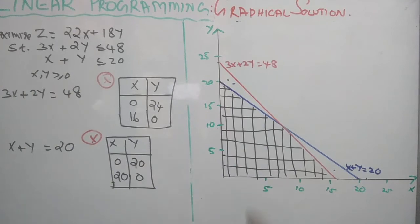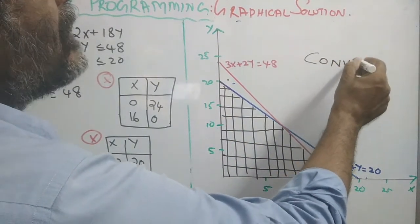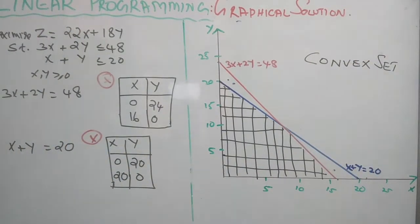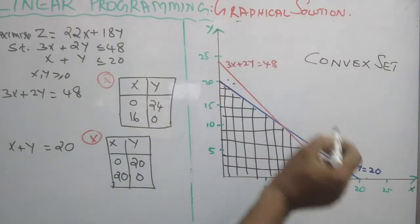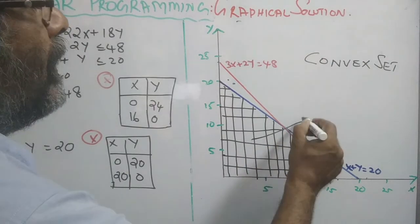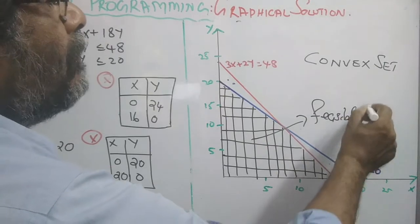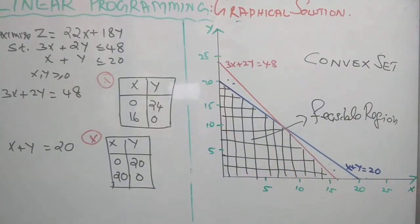The feasible region is the region which satisfies all the constraints simultaneously. In mathematics, the feasible region is termed a convex set. That is a property of a feasible region. In this problem we have only two constraints, and the feasible region satisfies both constraints simultaneously.